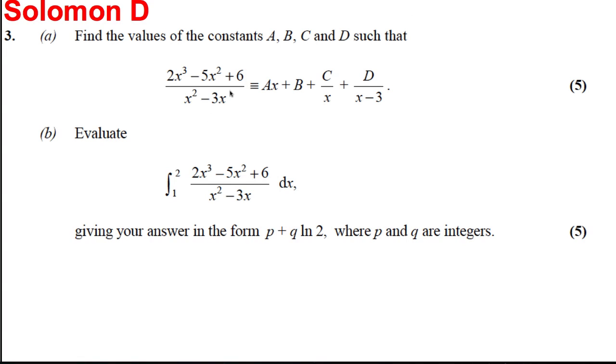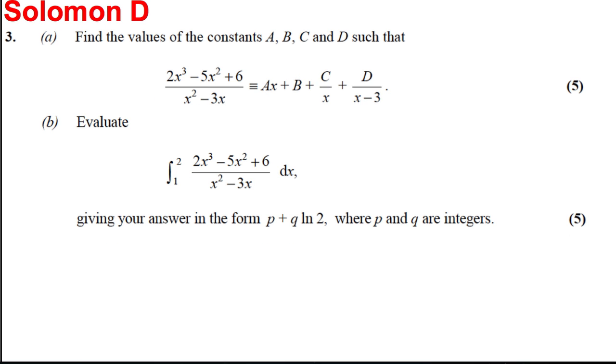In this question on partial fractions, we are given a quotient where the top has order 3 and the bottom has order 2. So therefore we have an AX plus B term, a linear term, plus C over the first factor. This factorizes as follows, so C over X plus D over X minus 3. And then we're asked to integrate the following, obviously using part A. So let's have a go at this then.